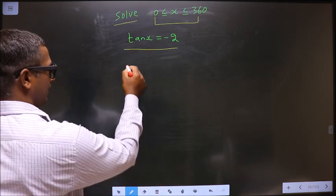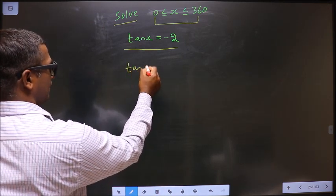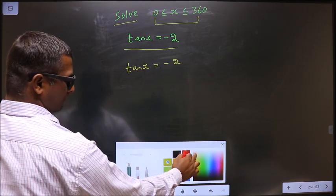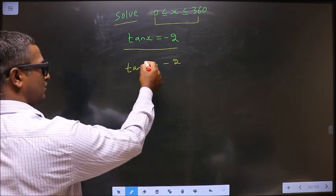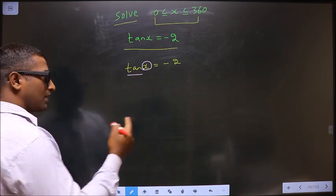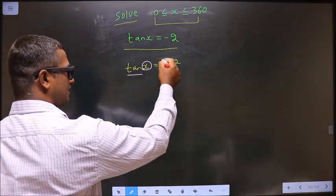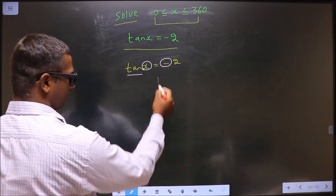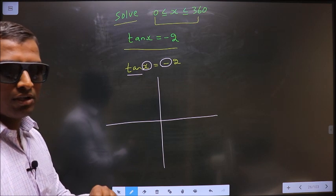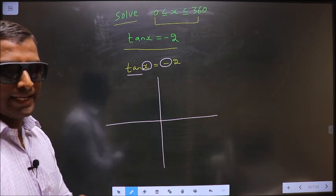First given equation is tan x equal to minus 2. Now to get the values for x, here you have tan and also it is negative. So now you check in what all quadrants is tan negative.